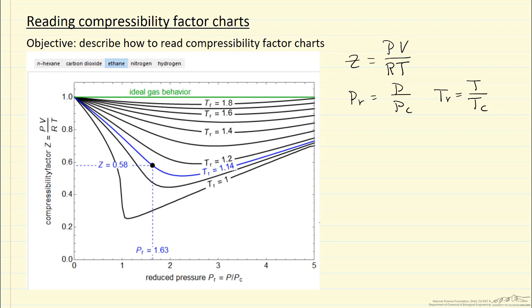If we have an ideal gas, that corresponds to Z equals one, and then for various reduced temperatures,